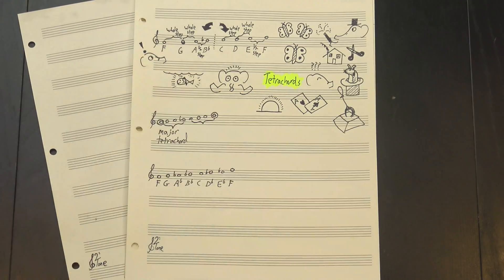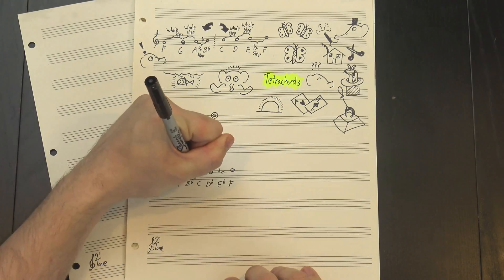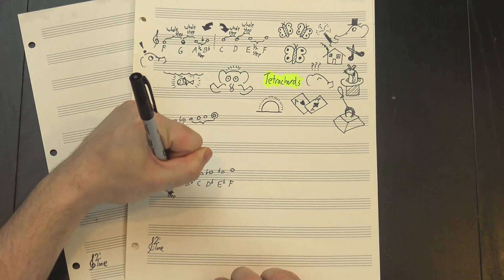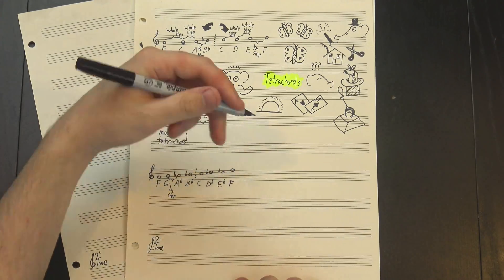For instance, as we saw, using two of these makes the major scale, so we call it the major tetrachord. Again, names are hard. But minor isn't quite so simple. If we look at the lower tetrachord, the half step is in the middle, whereas in the upper one it's right at the beginning.